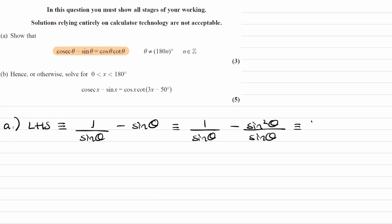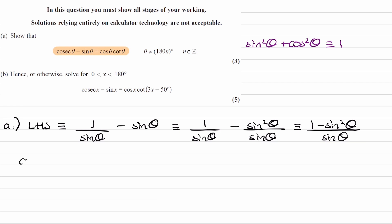Combine the two things. The numerator is now 1 minus sine squared theta. And we can then use the rule: sine squared theta plus cos squared theta equals 1. And then we can rewrite the numerator as cos squared theta.